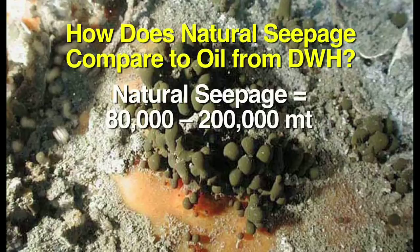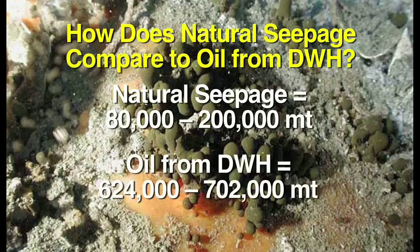The total amount of oil from the Deepwater Horizon blowout is estimated to have been about 4.9 million barrels, which is approximately 624,000 to 702,000 metric tons. It's also important to note that oil from the Deepwater Horizon wellhead was released from a single point in the Gulf, and the release occurred over a span of less than 4 months. These numbers are discussed in greater detail in the Educator's Guide.